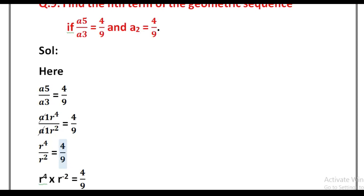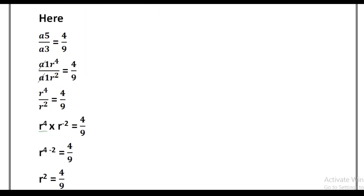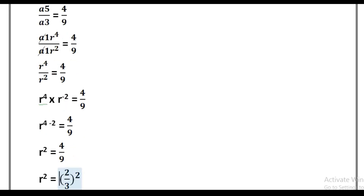Next, r⁴ divided by r² can be written as r⁴ multiplied by r⁻², so r^(4−2) = r². Therefore r² is equal to 4/9. Taking the square root on both sides, r² = 4/9.